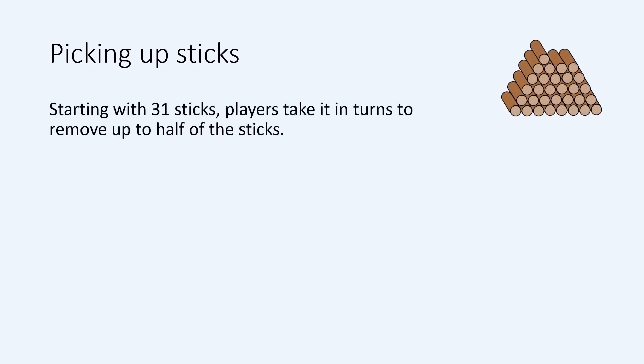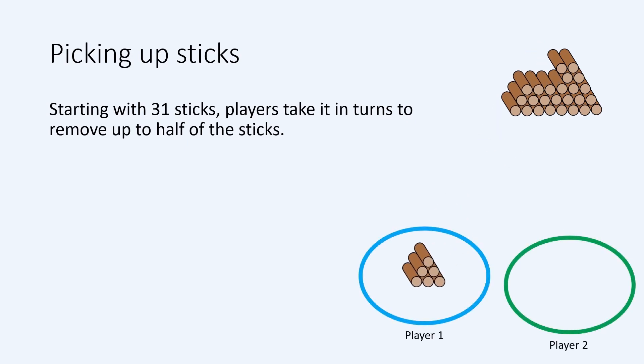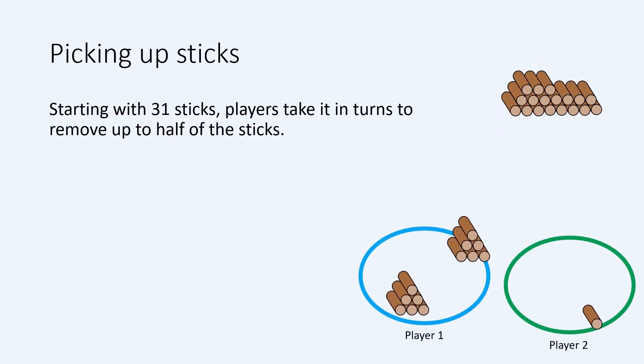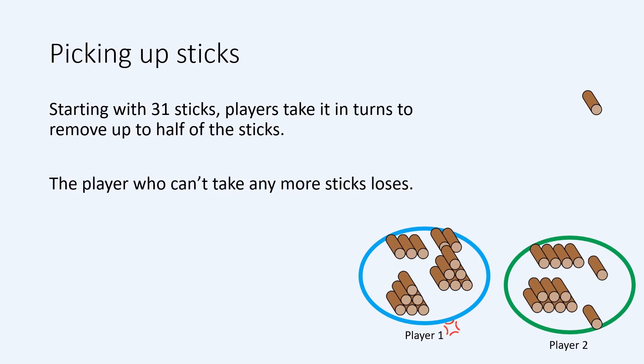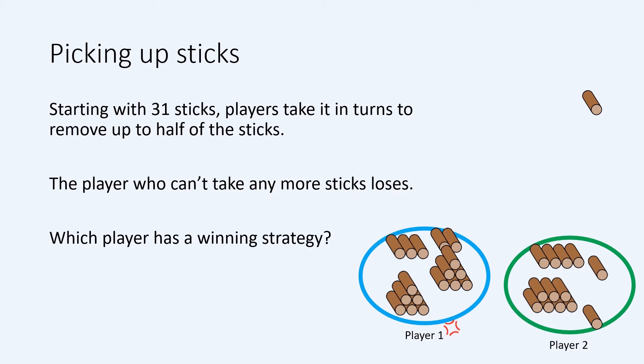Picking up sticks: start with a pile of 31 sticks. Two players take it in turns to remove up to half of the sticks, so on the first turn the first player can take between 1 and 15 sticks. The player who can't take any sticks — that is, the player who is left with a pile of just one stick on their turn — loses. Which player has a winning strategy? What about if you start off with a pile of K sticks — who has the winning strategy then?